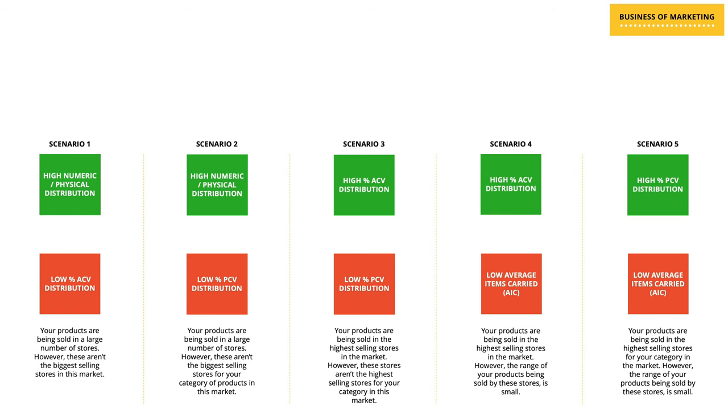In scenario five, there is high percentage PCV distribution but at the same time low average items carried. This means that while your product is already present in the stores which are the most important or highest selling stores for your category, the range of products being sold in these stores is low. Just like the previous case, what you need to focus on is increasing the range of products that these stores carry. If you are able to do that, you would not only be present in the most important stores for your category but these stores would also be selling most of the products in your range.